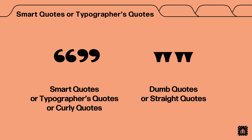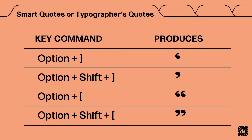Let's talk quotation marks. On the right you have dumb quotes, or straight quotes. On the left you have these thick, gorgeous, chunky smart quotes, or typographer's quotes, or curly quotes. How do we get these awesome curly quotes? There are some key commands you can use in Adobe programs or just any typing program. Option right bracket or option shift right bracket give you the single quotes, and option left bracket or option shift left bracket give you the double quotes.